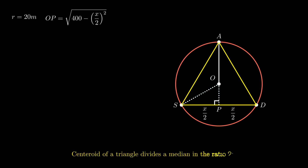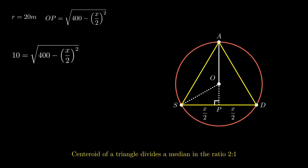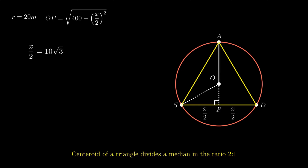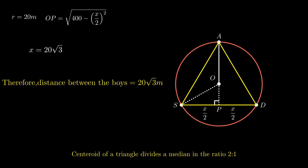Since the centroid of an equilateral triangle circumscribing a circle lies at the center of the circle and divides the median in the ratio 2:1, the ratio of segment AO to segment OP equals 2:1. As segment AO is the radius and equals 20 meters, on simplifying this ratio, we get OP equals 10. Since OP equals the square root of (400 minus (X/2) squared), squaring both sides gives 100 equals 400 minus (X/2) squared. Simplifying, (X/2) squared equals 300, so X/2 equals 10 root 3, and therefore X equals 20 root 3. The distance between the boys is 20 root 3 meters.